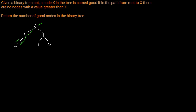Now for our other path through the tree — we go into the 4. Is this a good node? Yes, because there's no value on this path so far that has a value greater than 4. So 4 is a good node. Now we go to the left child, node 1. Is there a node in the tree with a greater value than 1? Yes, both 3 and 4 on this path have a value greater than 1. Therefore, this is not a good node. Now let's go to the 5. Is 5 a good node? Yes, because there's no node on this path whose value is greater than 5, so that means we have a good node here.